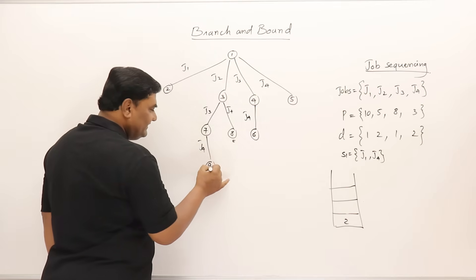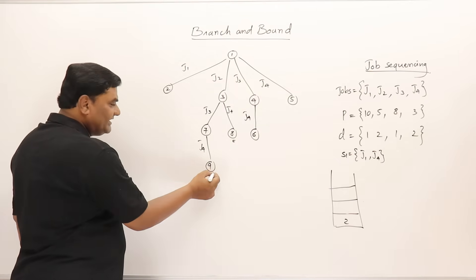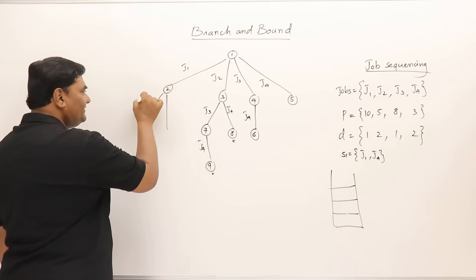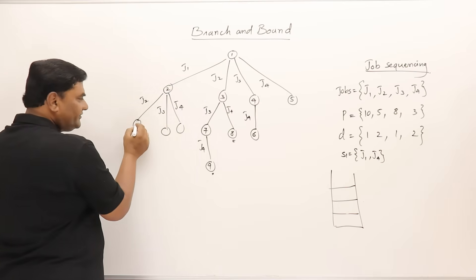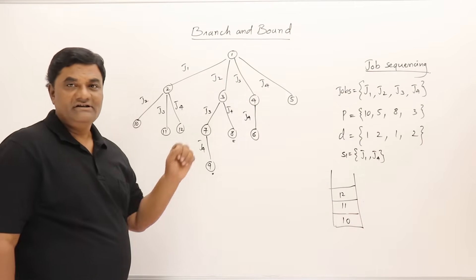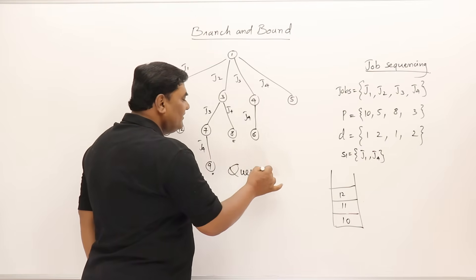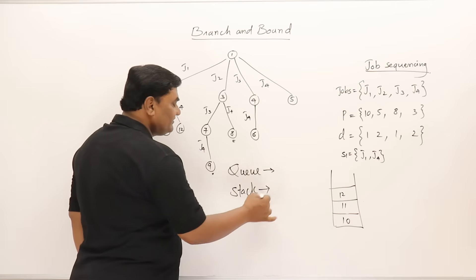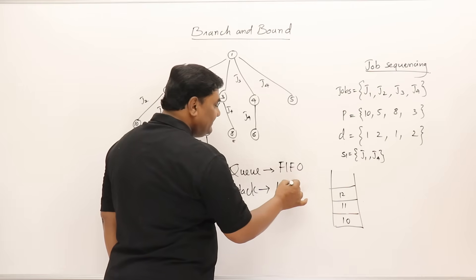Node 8 is on the last job so it cannot be expanded. Node 7 can be expanded to give node 9 with job four. Then we take out the root's first-job branch (node 2) and expand it: second, third, or fourth job, giving nodes 10, 11, and 12 pushed in order. The difference between the two methods is clear: the first used a queue (FIFO), giving FIFO branch and bound; the second uses a stack (LIFO), giving LIFO branch and bound.